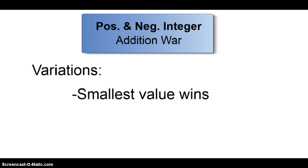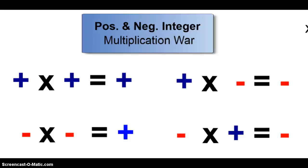A couple variations you can do for addition war with positive and negative integers. You could change it so that the smallest value wins. So shuffle the cards back up and say, on this one, whoever gets the smallest number is going to win and you're going to take all the cards. Another thing you could do is play subtraction war, where the rules would change a little bit, just whether or not you're subtracting. But that would be a good variation to toss in this game too.